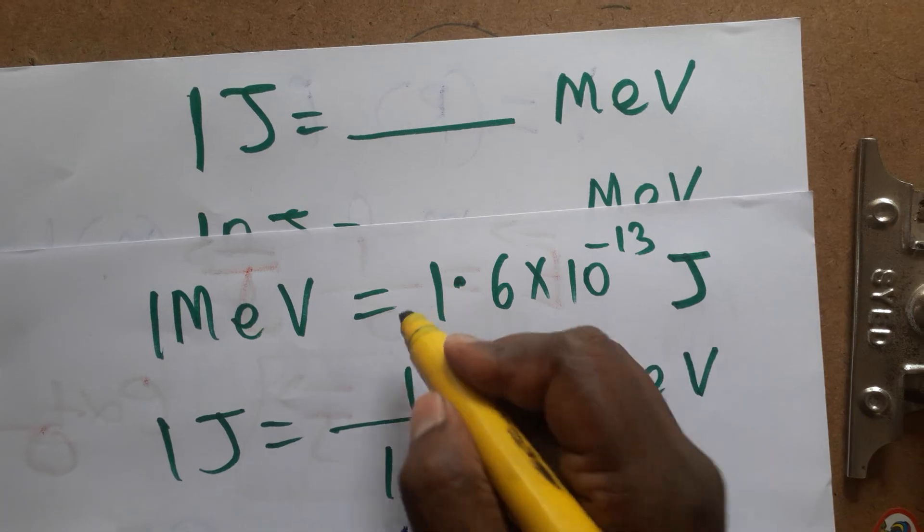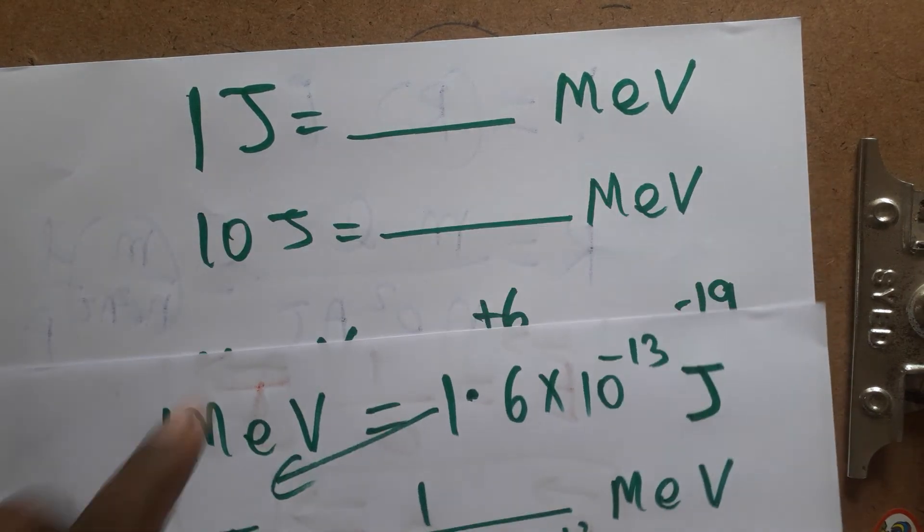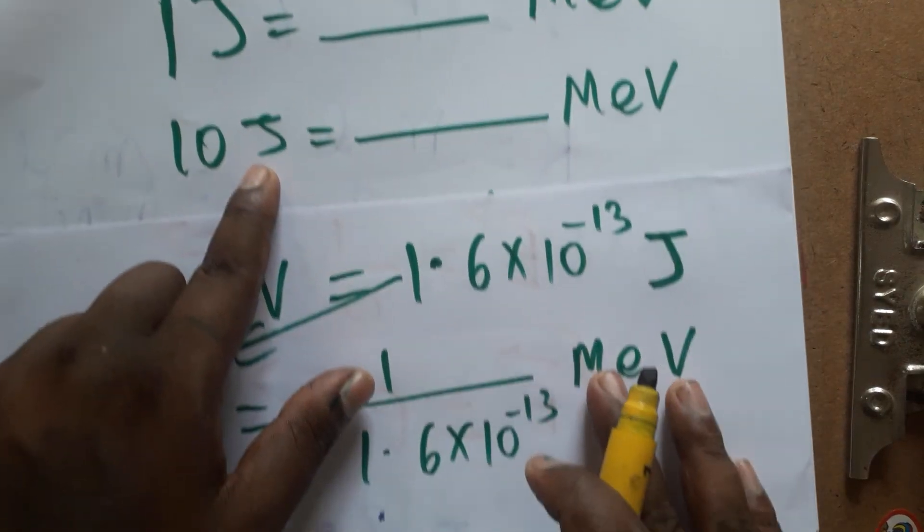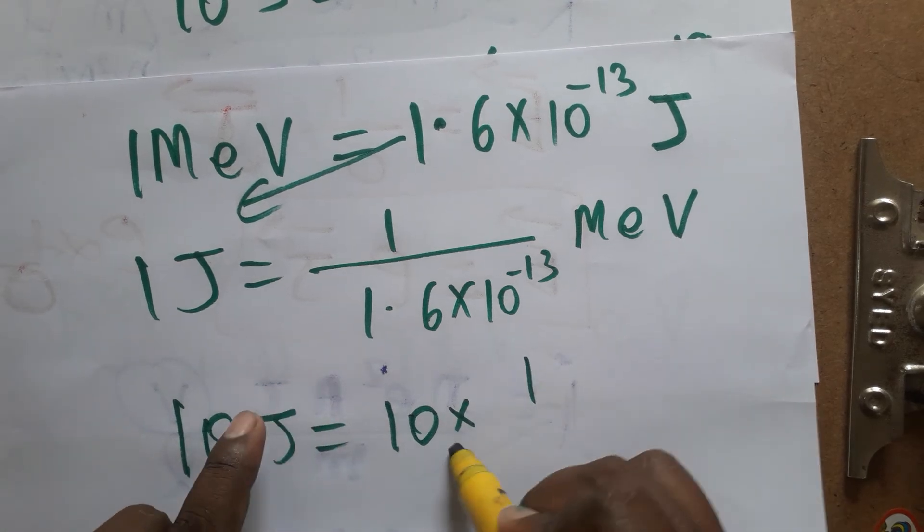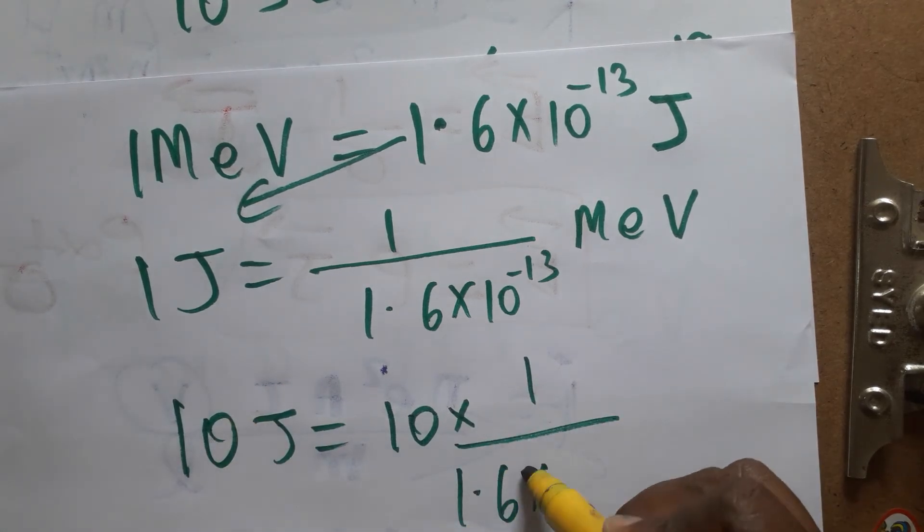Okay, just I am bringing as a denominator. Now example problem, 10 joule is equal to dash MeV. So 10 joules is a 10 times of 1 point divided by 1.6 into 10 power minus 13 MeV.